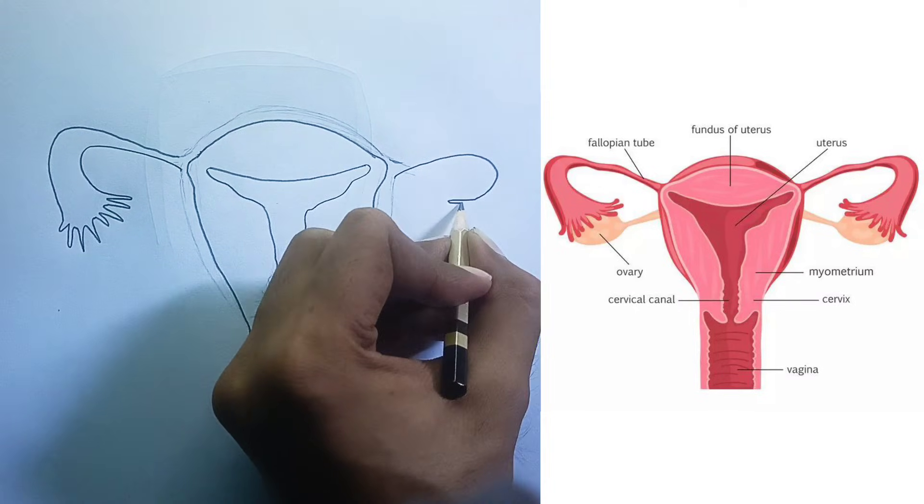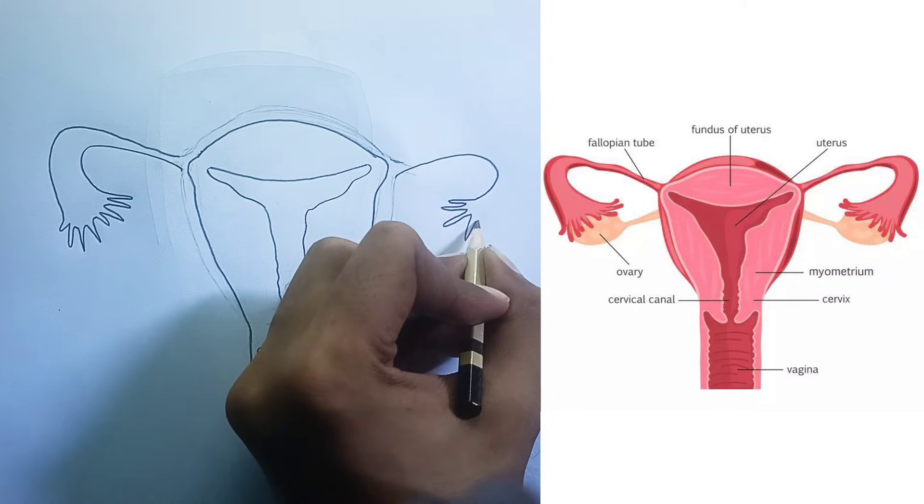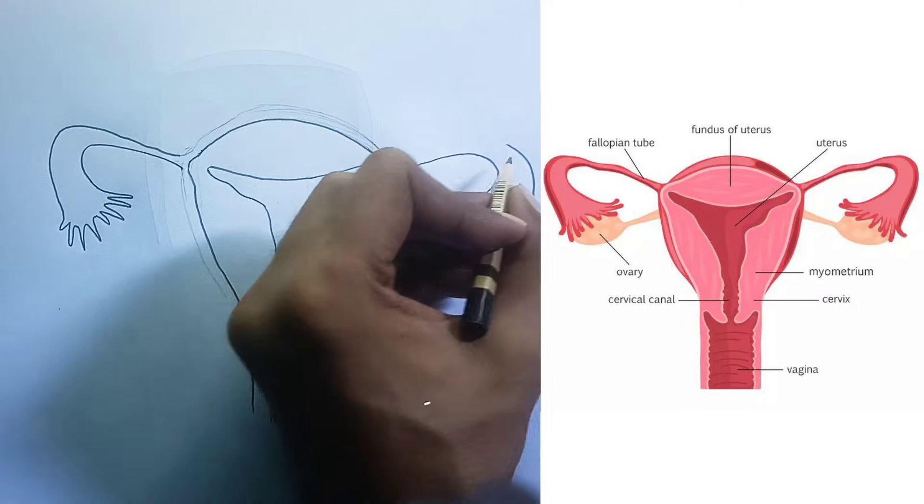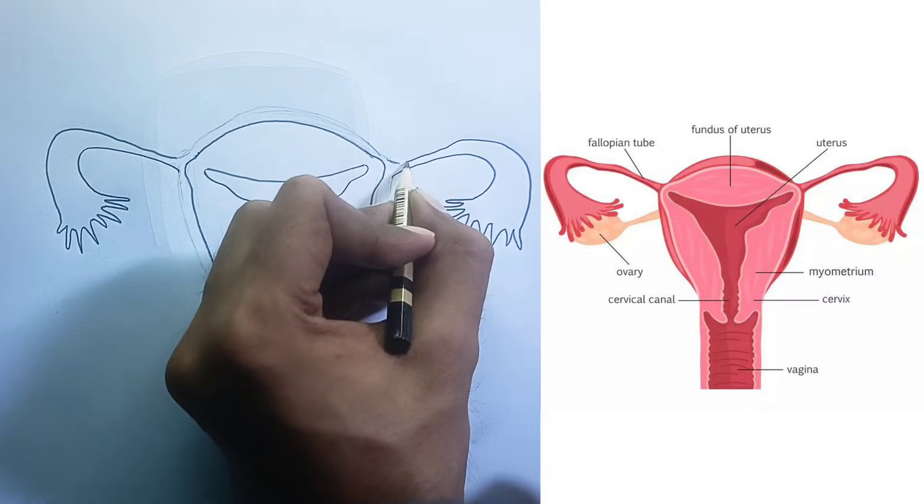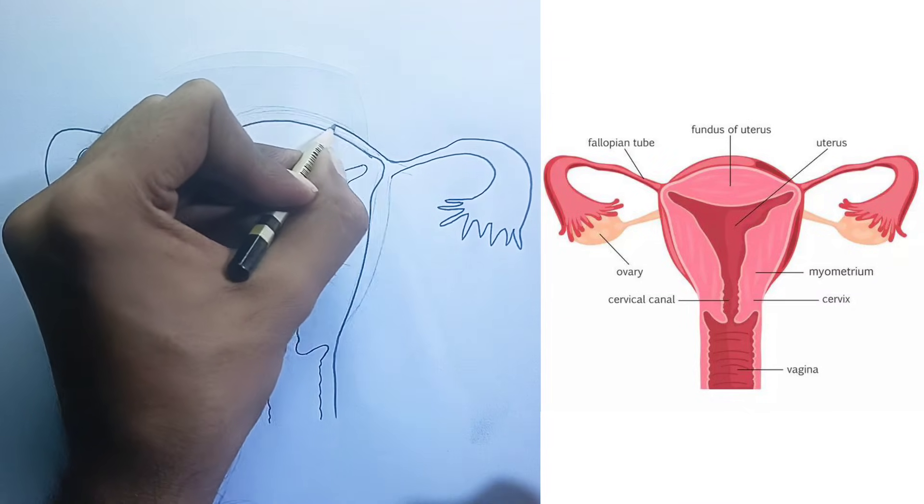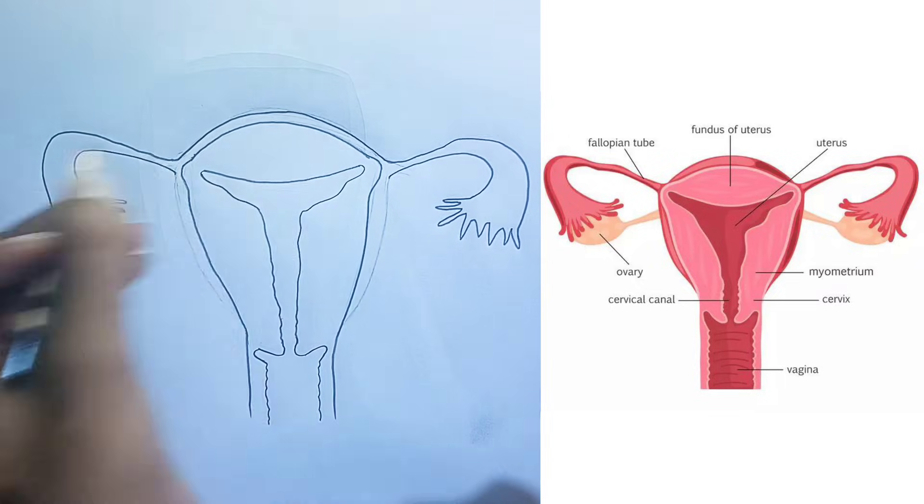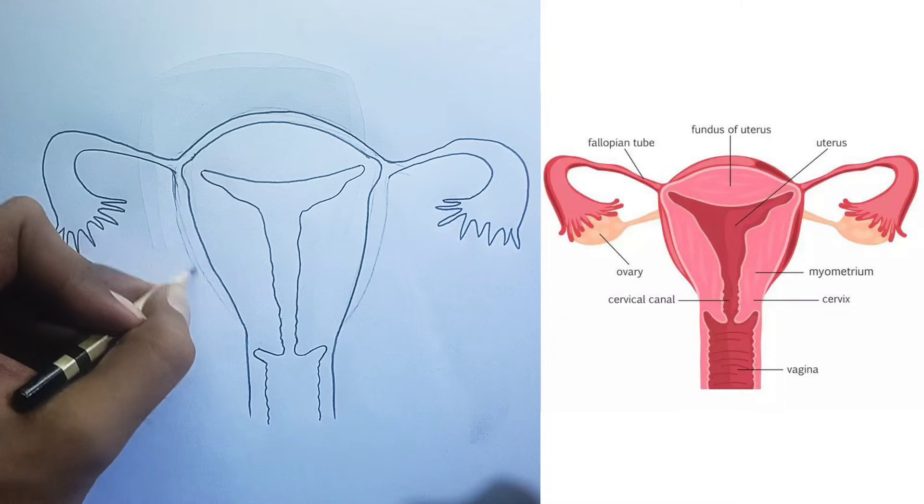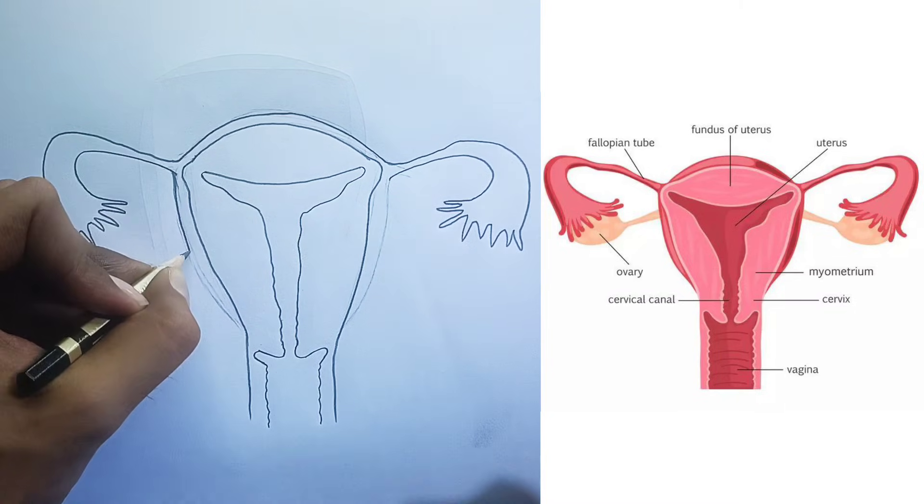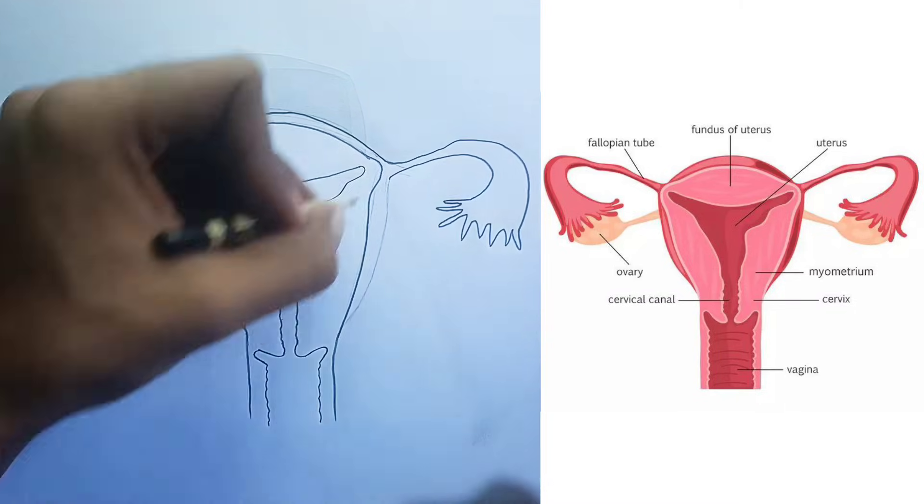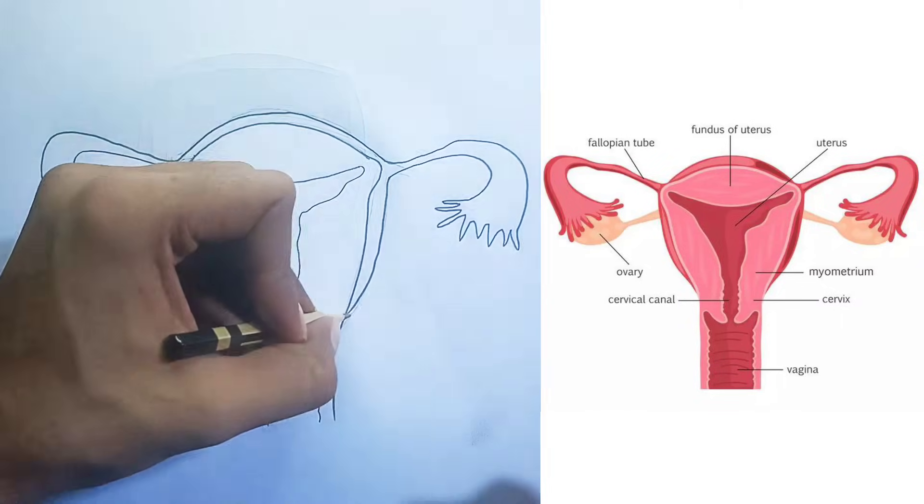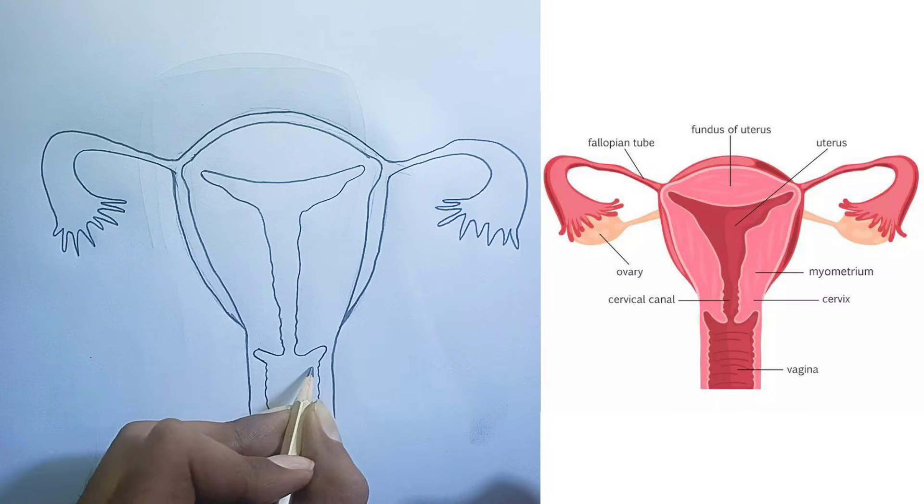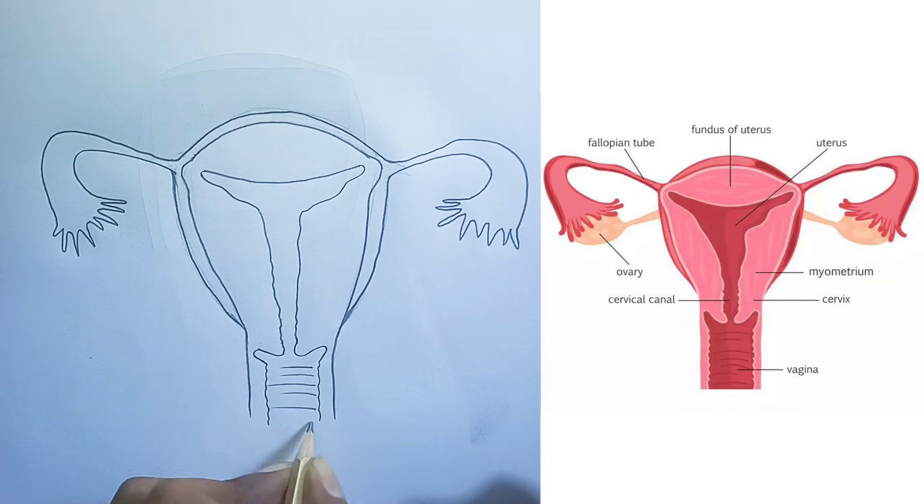In summary, this diagram provides a clear anatomical overview of the key internal organs involved in female reproduction, illustrating their relative positions and connections.